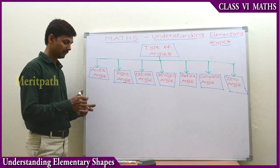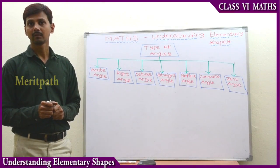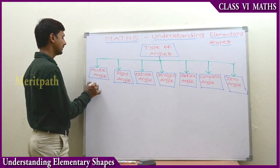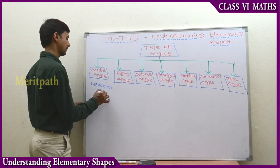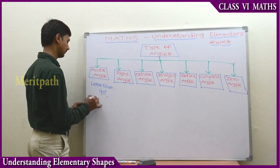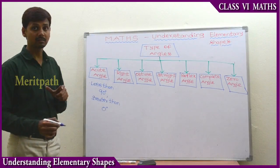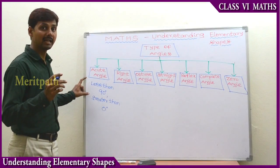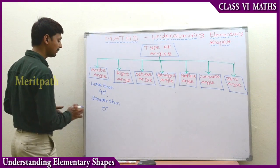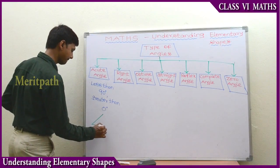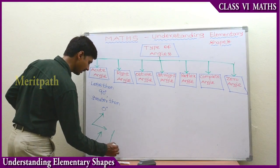First, the acute angle. The angle which measures less than 90 degrees and greater than zero degrees - we call it an acute angle.